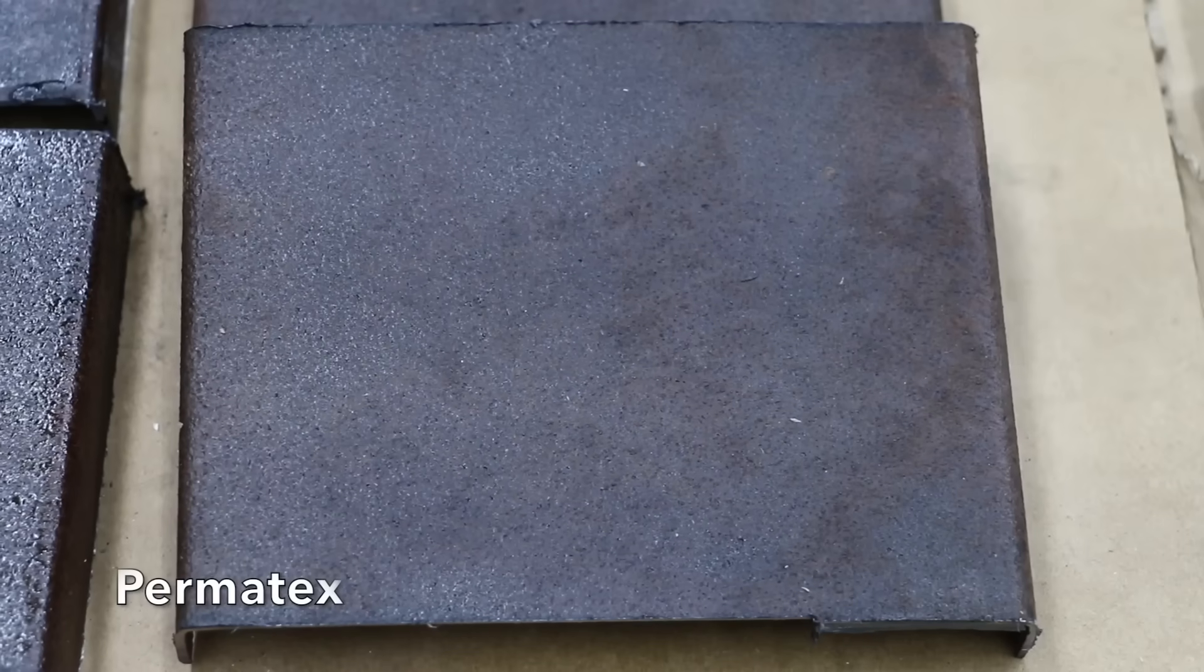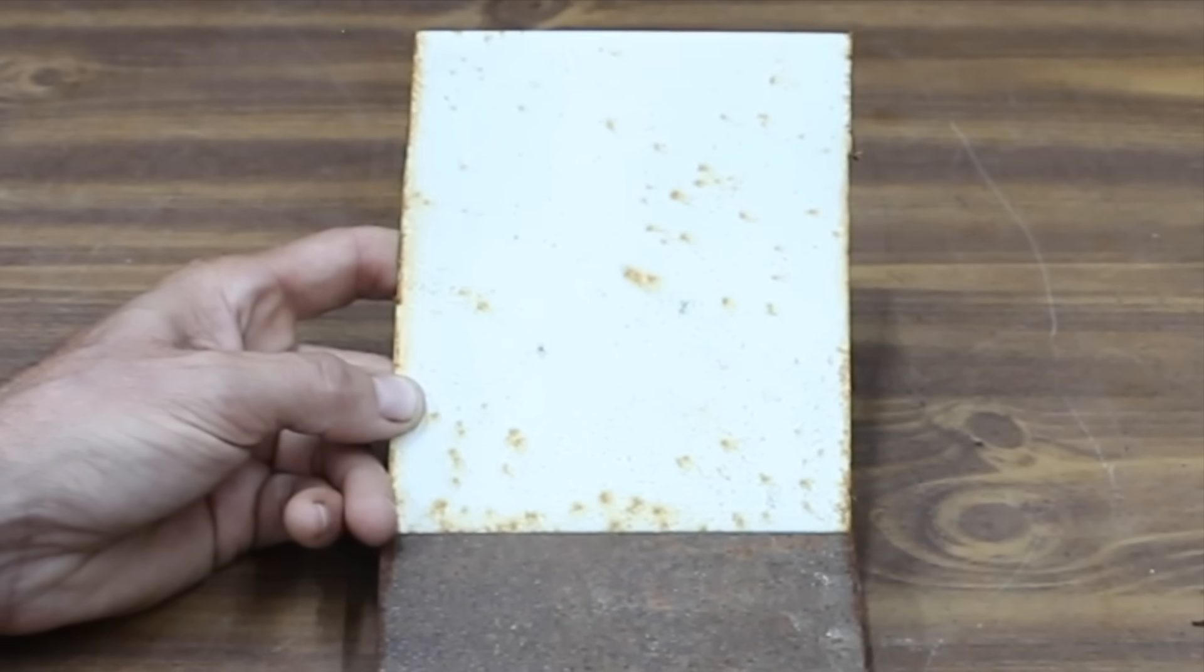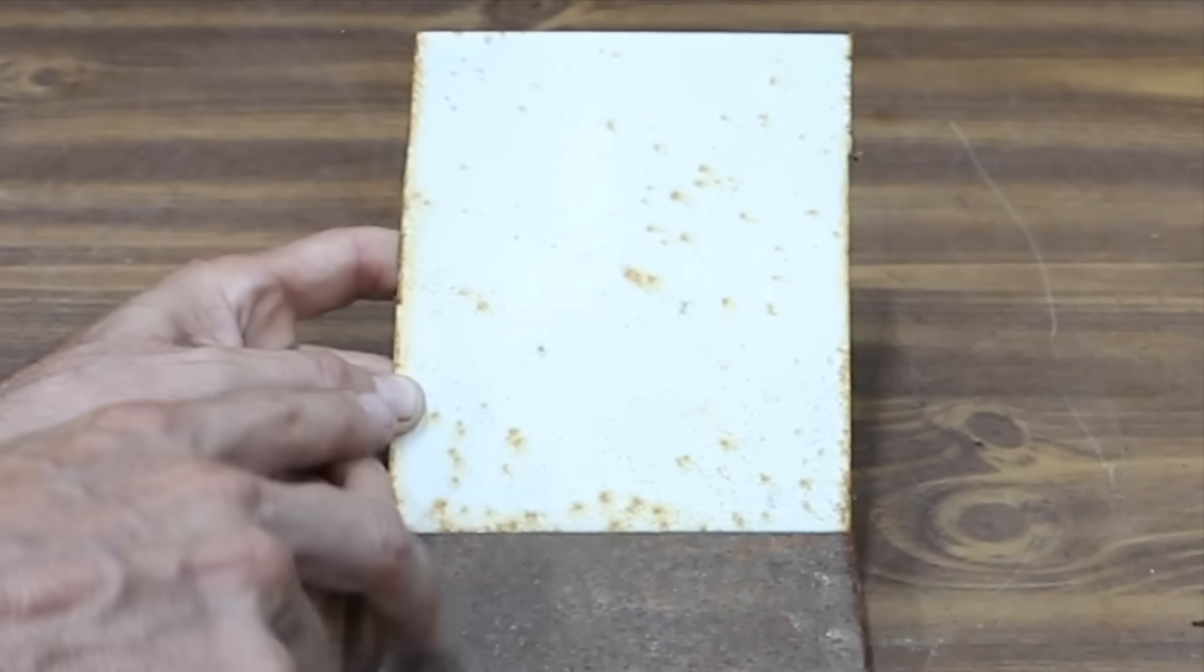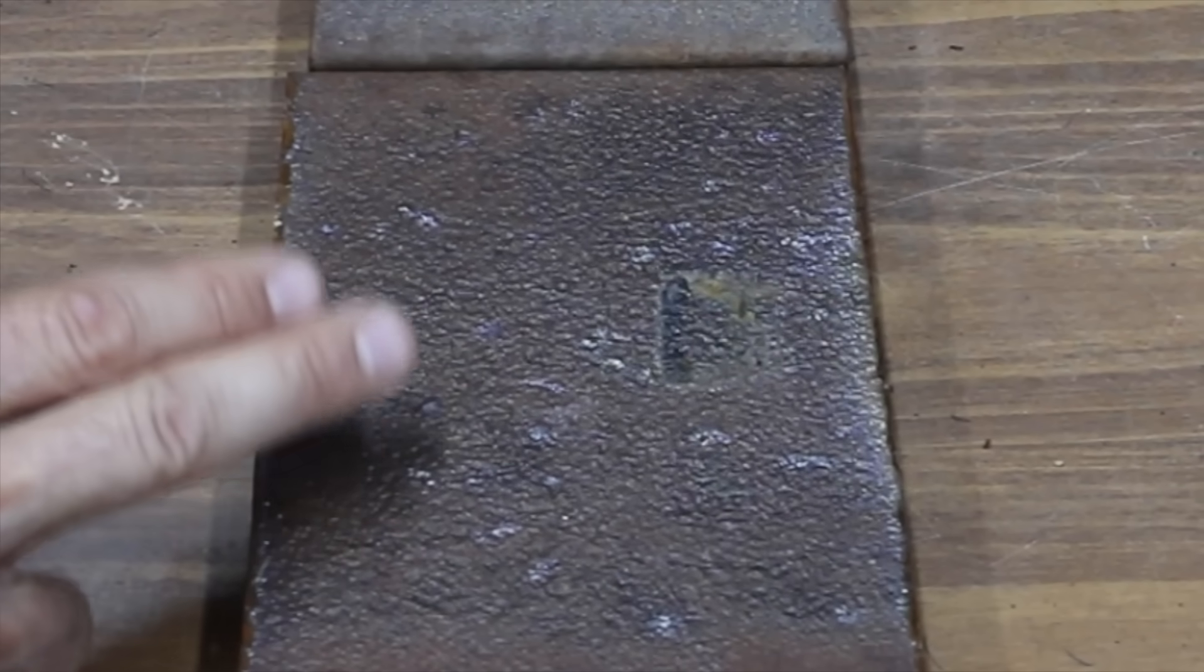The Permatex seems to have a less glossy finish than most of the other products. Finishing in fifth place is the Permatex. The Permatex actually did quite a bit better than the other brands with regards to the top panel. However, the middle and lower panel did experience quite a bit of rust.